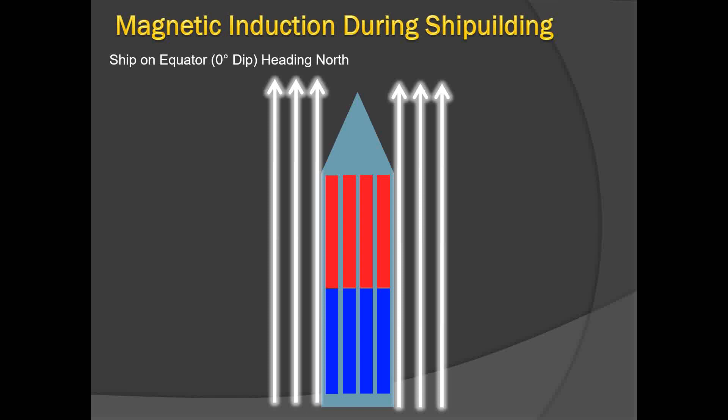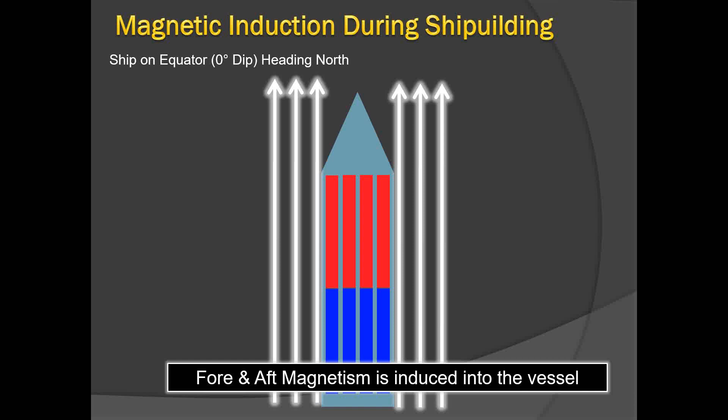If a ship is built on the equator, where dip is 0°, the magnetic lines of force are absolutely horizontal. Dip is the angle a freely suspended magnetic needle makes with the horizontal — at the equator the needle is absolutely horizontal, so dip is zero. When a ship is built on the equator, it behaves like a freely suspended magnet that is horizontal: the forward part of the ship becomes the red (north) pole and the aft part becomes the blue (south) pole. So only fore-and-aft magnetism is induced in this vessel.